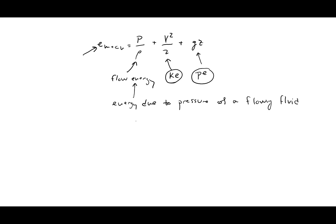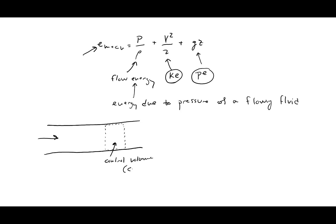Let's look at an example of what's meant by that. Say we have a pipe with fluid flowing through it. We pick a control volume — a volume in space that we're interested in, where mass can flow in or out. Since we have fluid flowing through a pipe, we have mass entering and leaving our control volume.